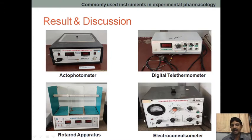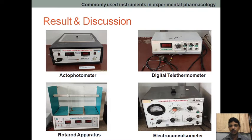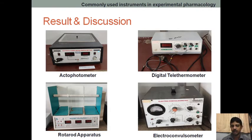Coming to the electroconvulsometer, it is used to produce convulsions in experimental animals — rodents like mice and rats. We give a particular set of electric current for a very short duration. After giving the electric shock, the animal will produce convulsions, and we need to record the time of convulsion and the different phases of the convulsion. That is the electroconvulsometer.